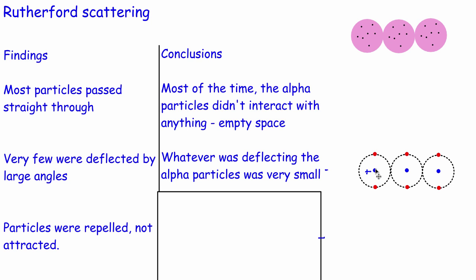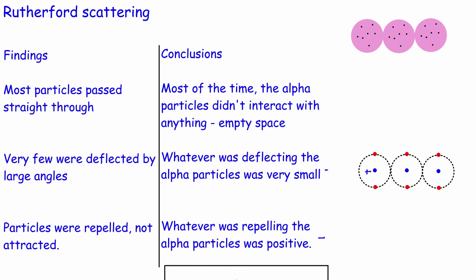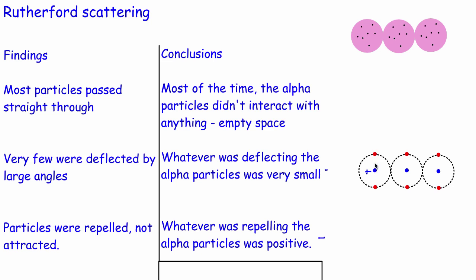So now we've got this thing which is very small compared to the size of an atom, with empty space around it. The fact that alpha particles are repelled and not attracted means this thing must be positive, because as the alpha particles — which are themselves positive — came in, some of them, going almost head-on towards this thing, were repelled at really big angles.